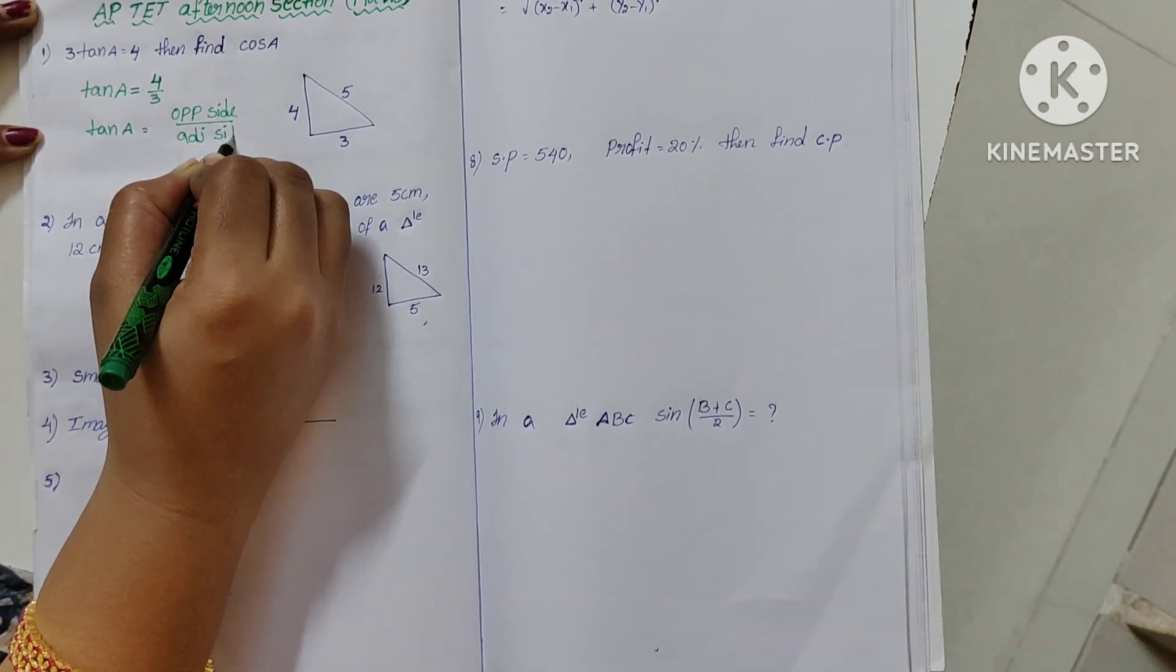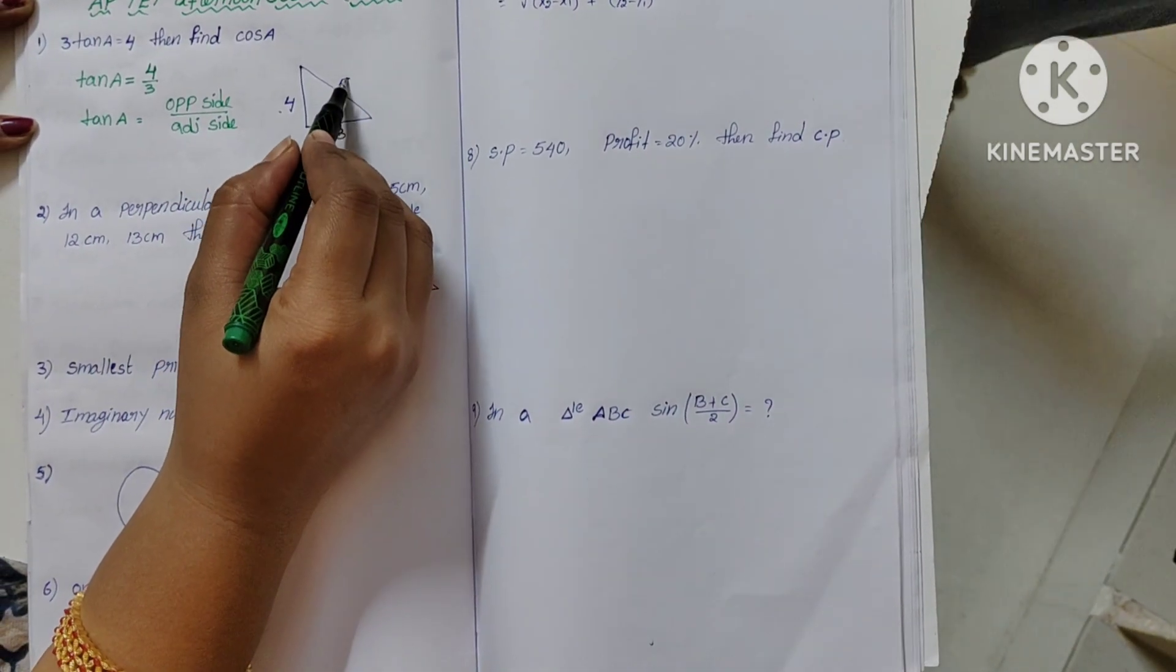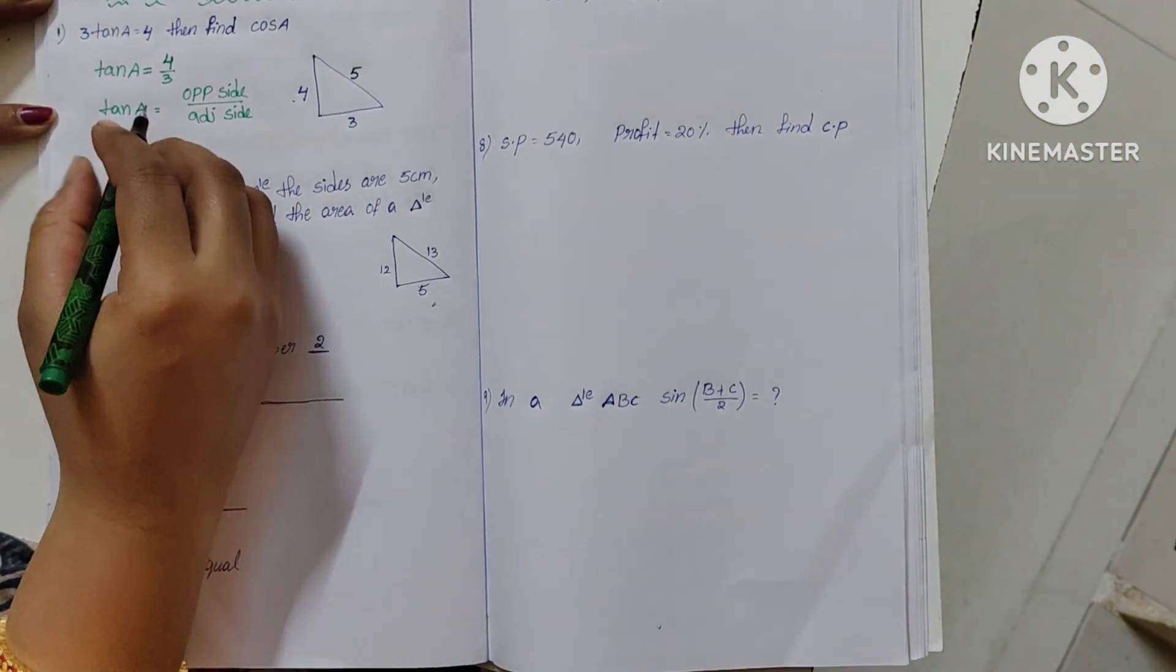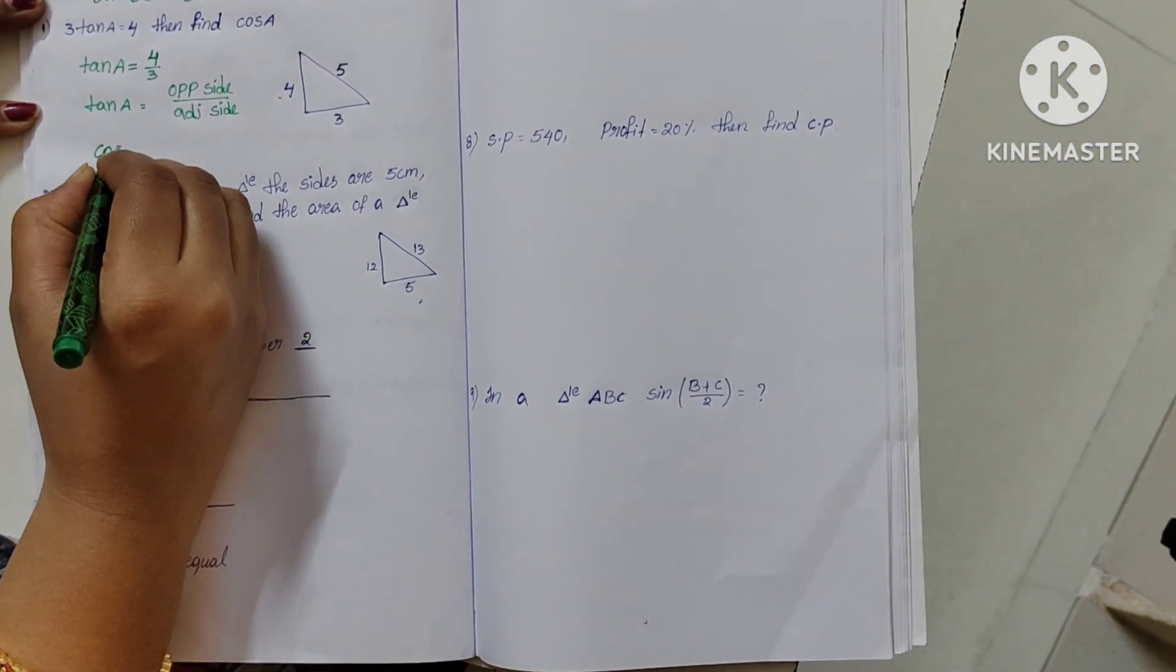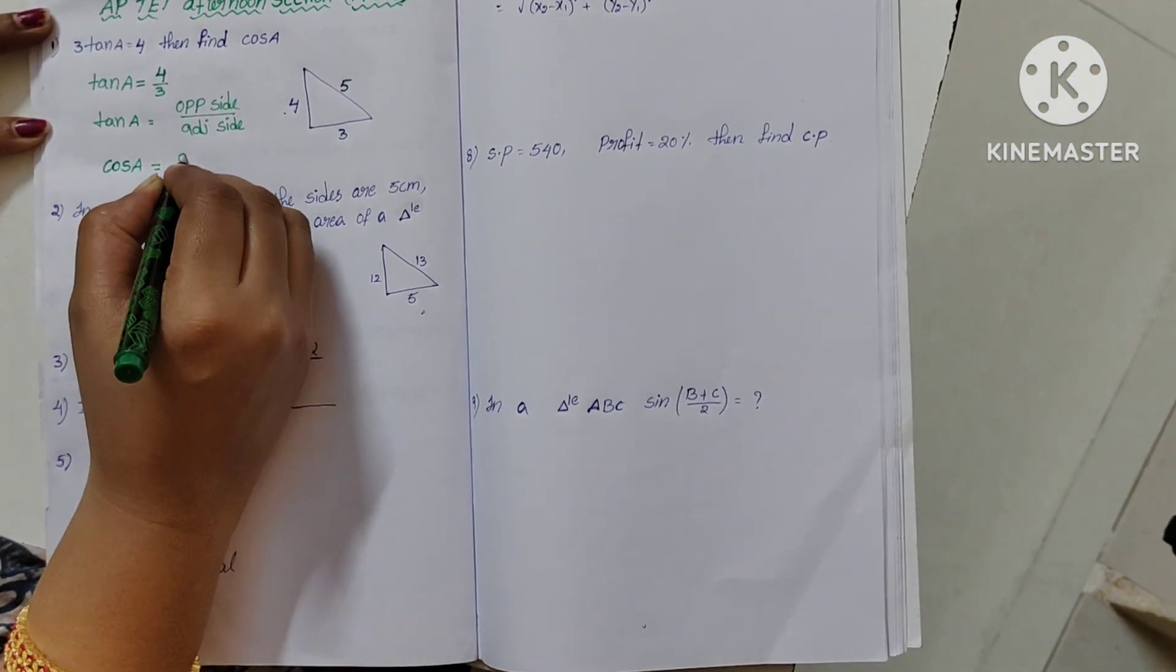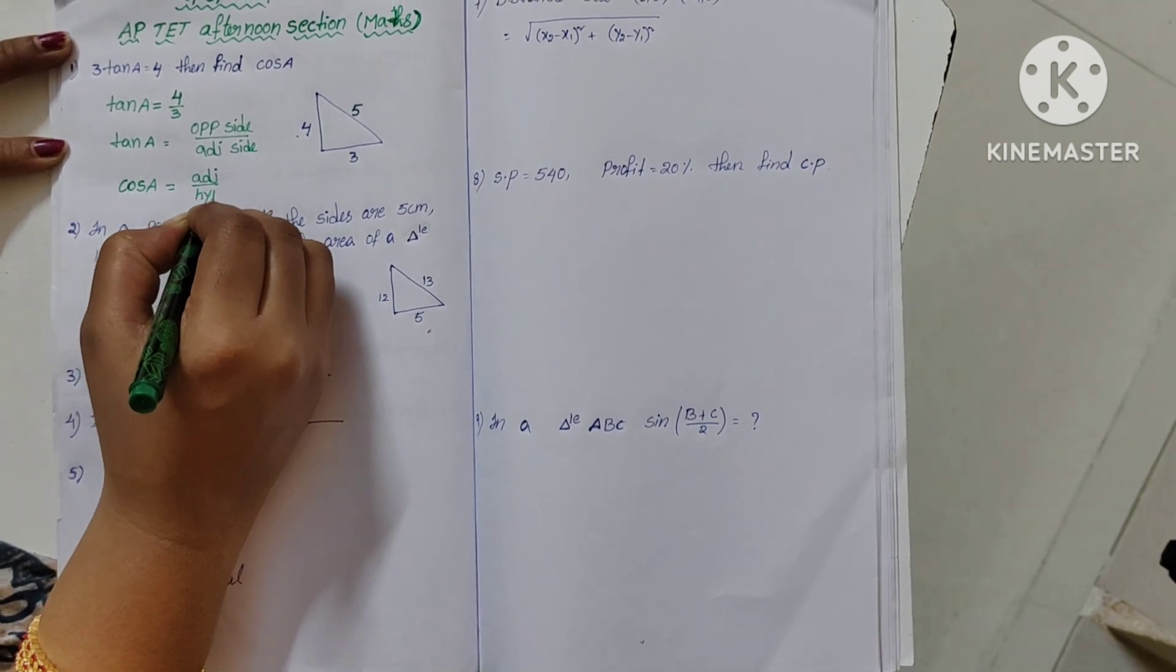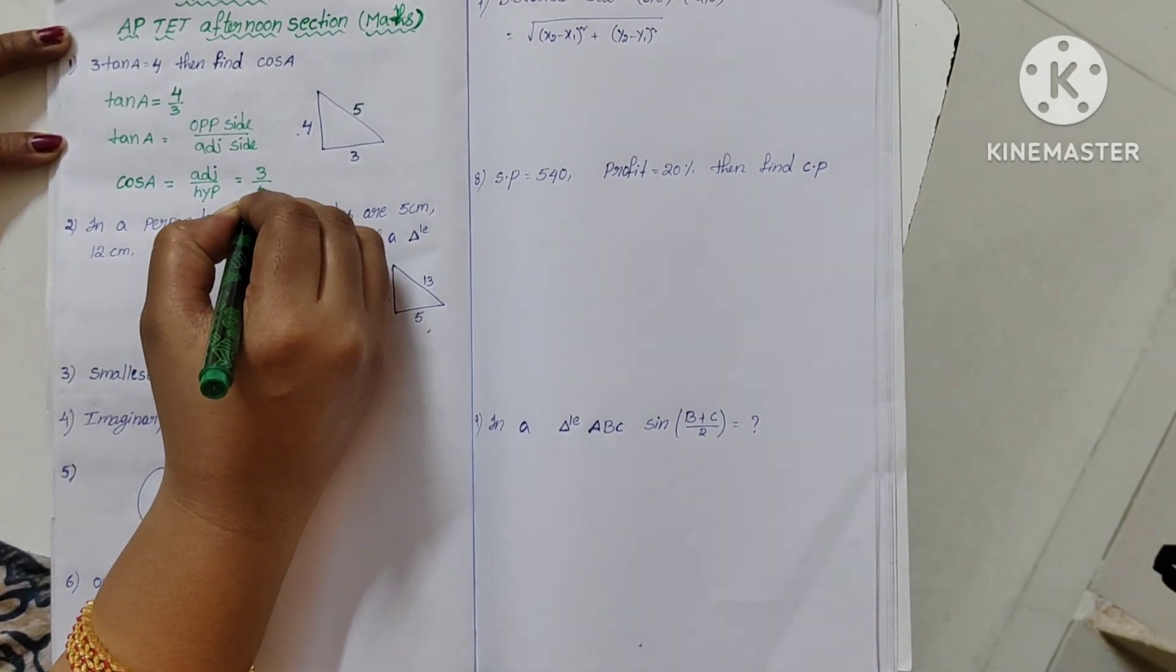Tan a is opposite side by adjacent side. So in a right angle triangle, 4, 3, and 5. Using Pythagorean theorem, we find the hypotenuse is 5. Now we find cos a, which is adjacent side by hypotenuse.